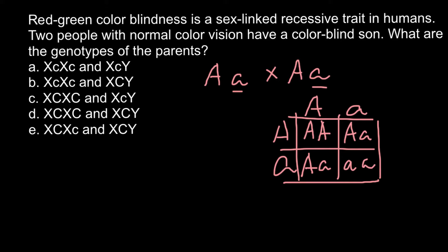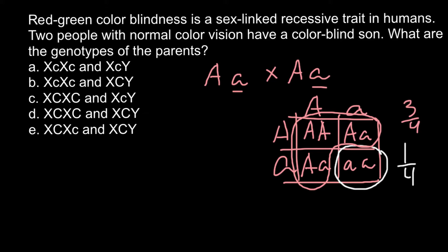As you see here, this would be one quarter, and 75% — three out of four — would be phenotypically normal, and two of them would be heterozygous or carriers.